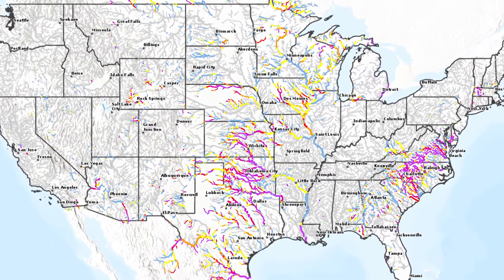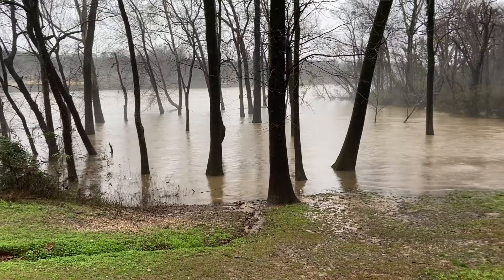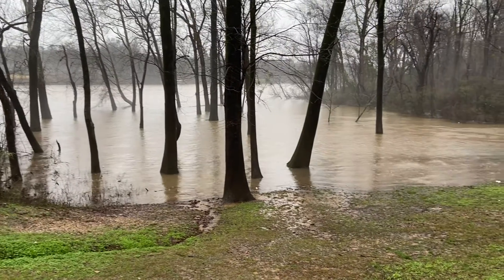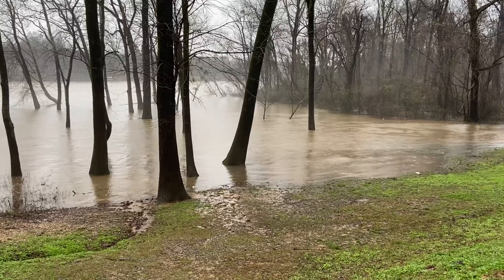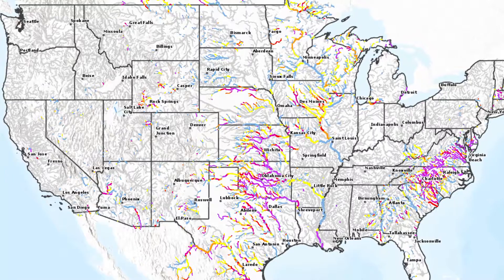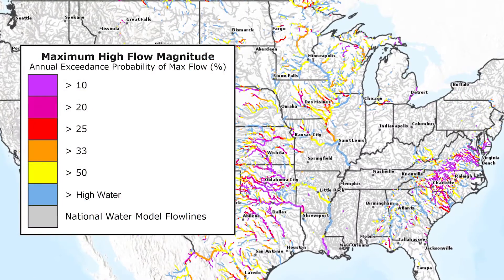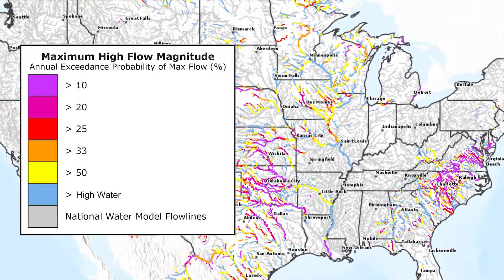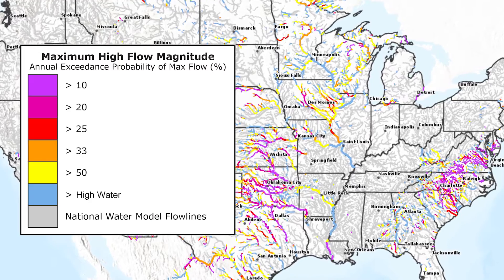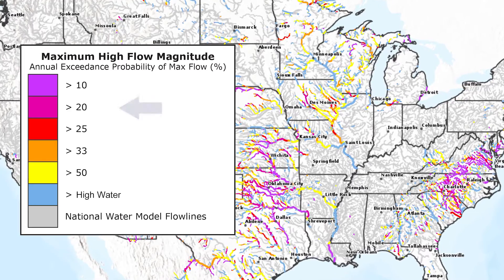The Maximum High Flow Magnitude Service provides visualizations that draw your eyes to streams experiencing or those forecast to experience high water conditions. These popular visualizations highlight stream reaches with flows at or above the estimated high water threshold.